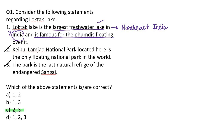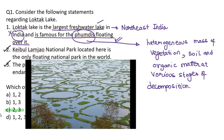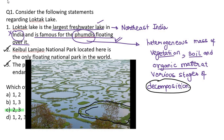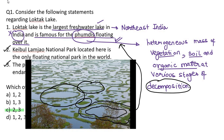It is famous for the phumdi's floating over it — that is also correct. What are phumdi's? They can ask you this in your prelims. Phumdi's are heterogeneous masses of vegetation, soil, and organic matter at various stages of decomposition. The green areas which you can see on Loktak Lake — these are known as phumdi's. Keibul Lamjao National Park is located over here — that is also correct.